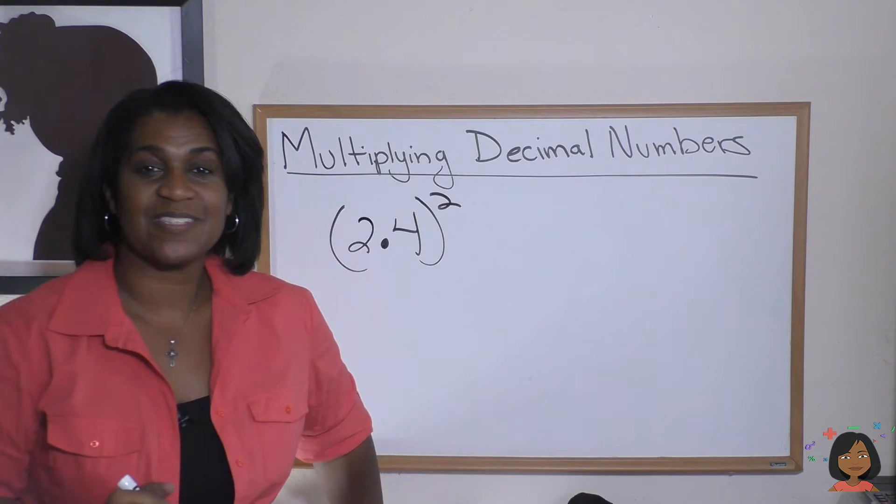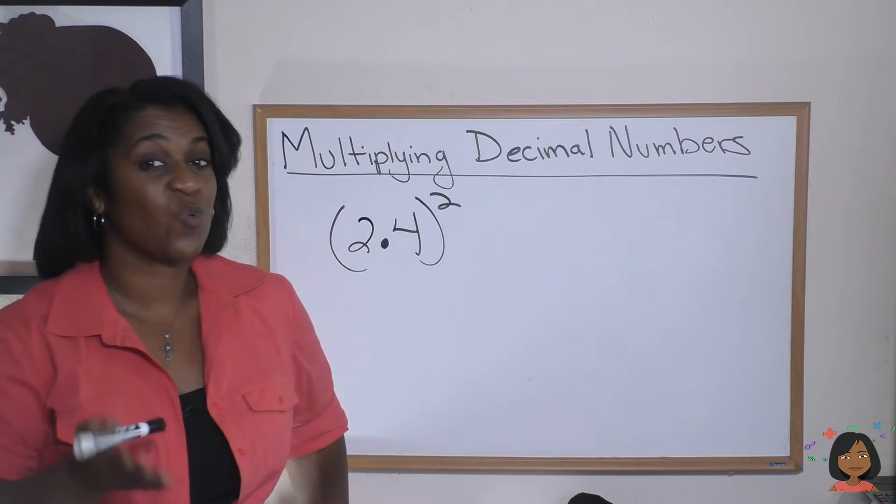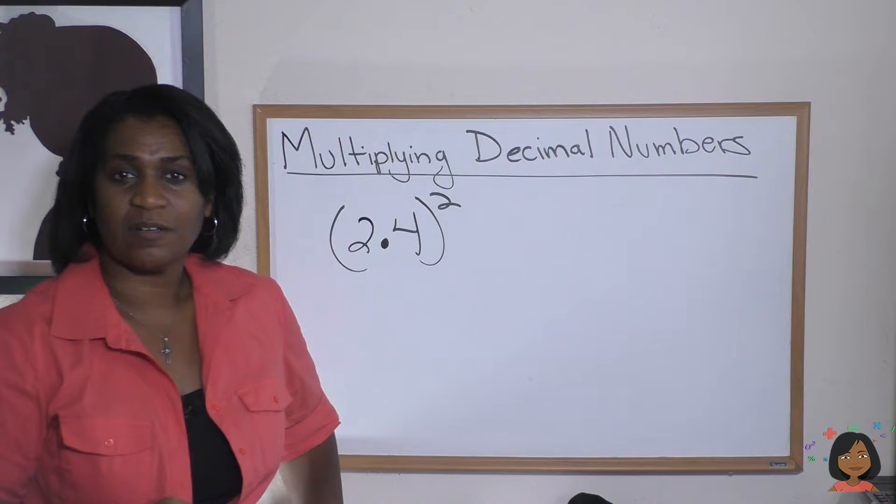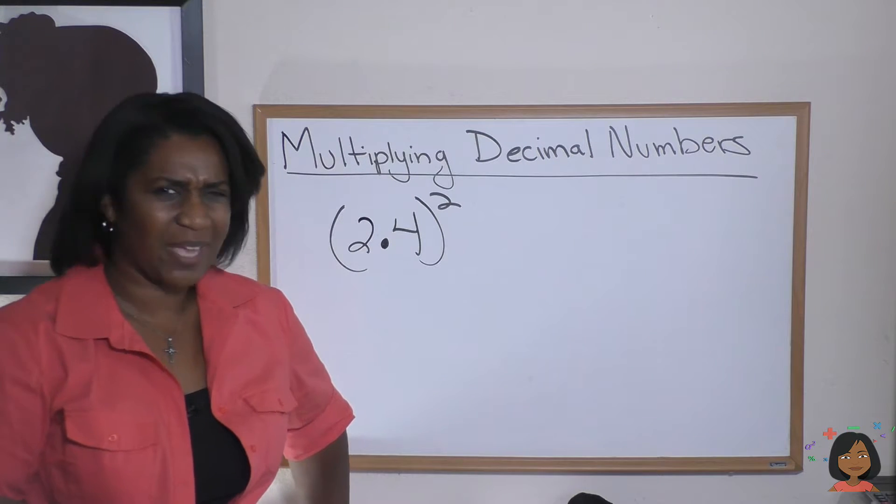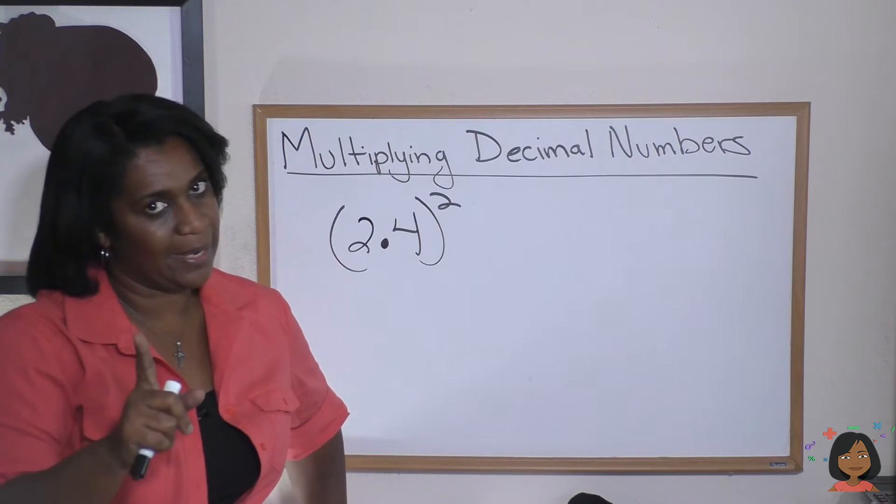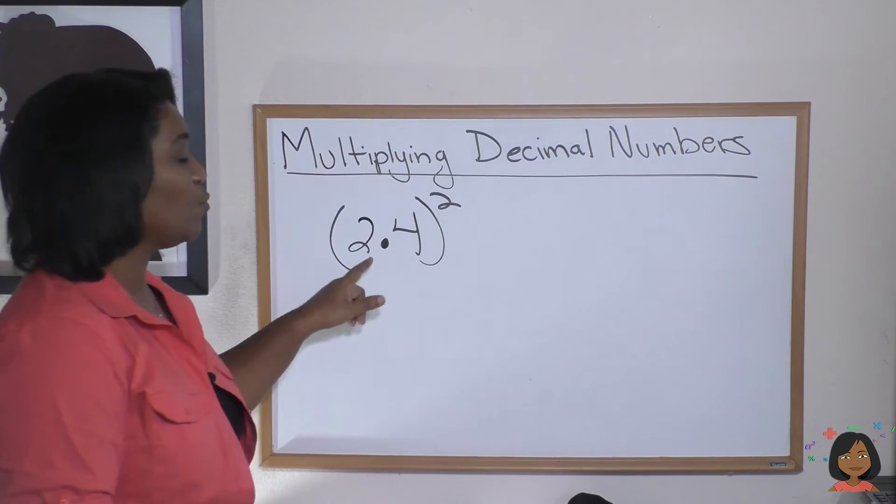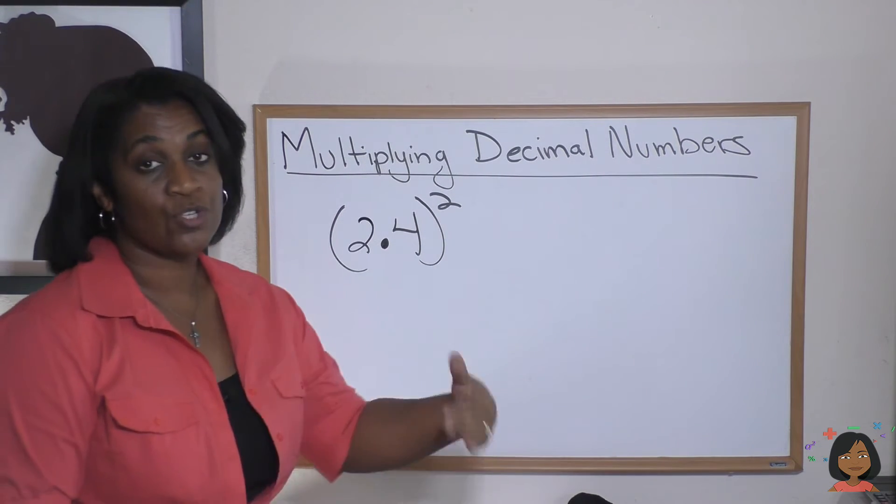One more problem. You might notice that I have a square. I have 2.4 squared on the board. Well, Nicole, I thought you were giving me a multiplication problem. Ah, but I did, right? Isn't a square the same thing as saying 2.4 times 2.4?